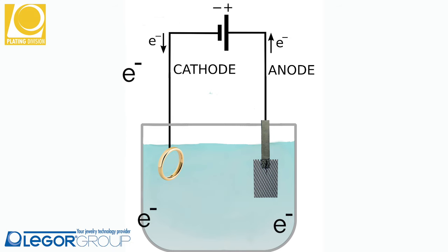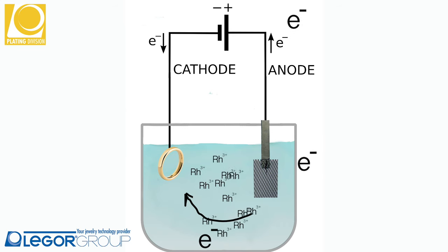The molecules in the solution lose electrons and again leave in the solution ions with a positive charge. These ions are attracted by the cathode and stick on the surface.